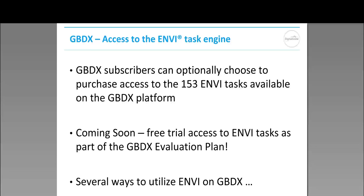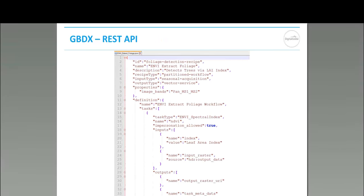There are several ways to utilize NV on the GBDX platform. We've documented all of the individual NV Tasks on our documentation page called GBDX University. One way is via our REST API for the workflow system, which allows you to run either individual NV Tasks or chain them together into unique analytical workflows. This is an example of a JSON definition that could be passed into our REST API to execute one or more NV Tasks in sequence on various data content, all powered by the cloud.